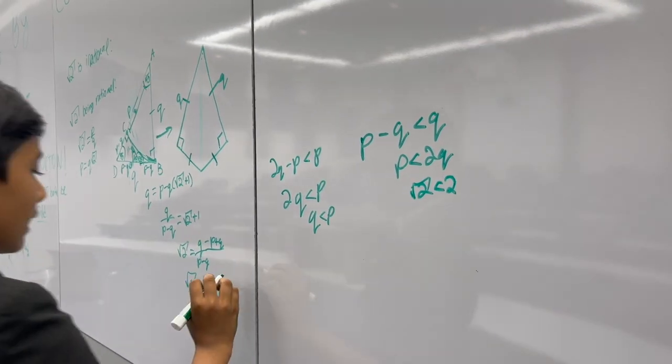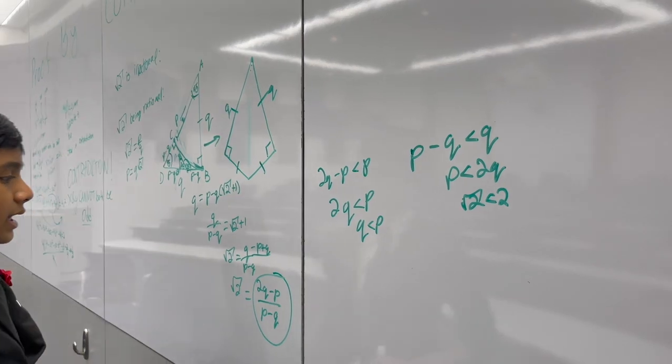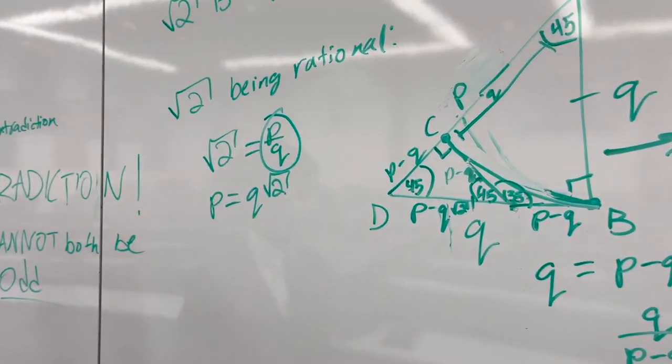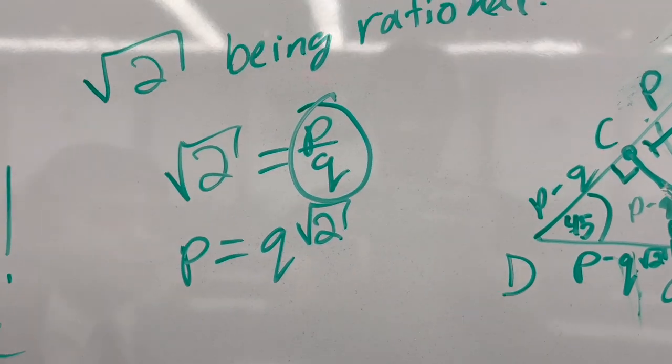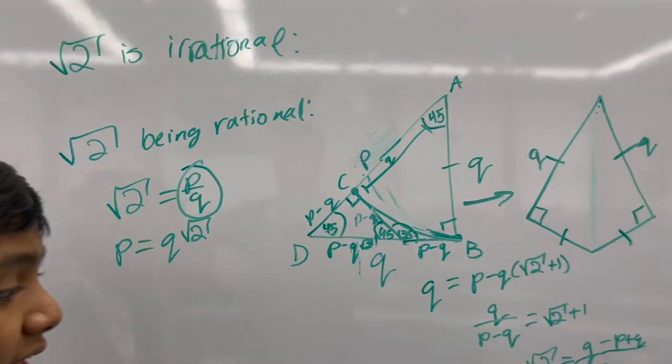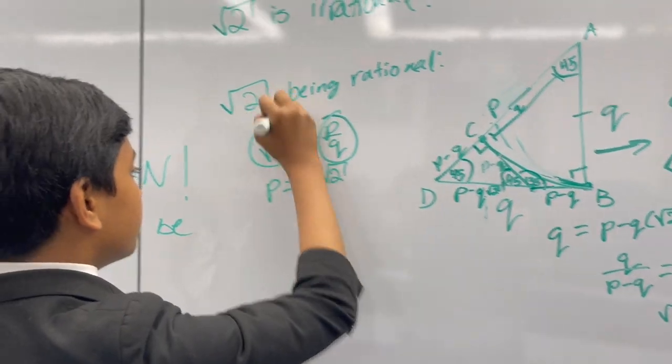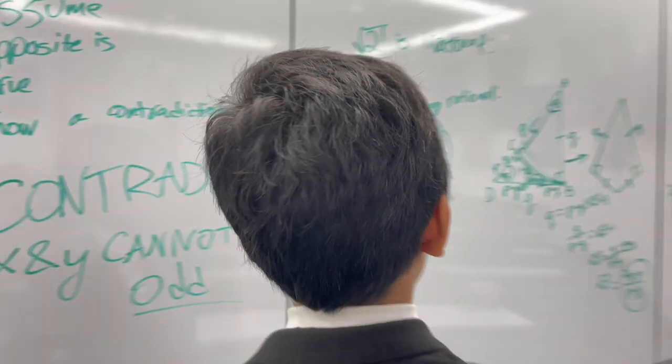So that means that we've now just defined this in lowest terms, even though p over q, we already said, were the lowest terms. So that means that there is no possible fraction that we can use to express root 2.